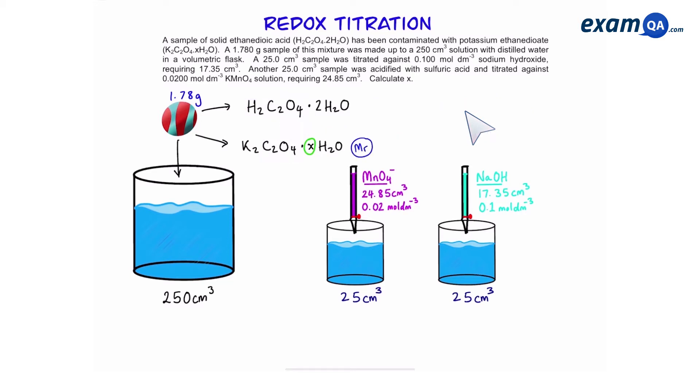Okay so to work out the value of x if you've seen the previous videos on redox titrations we want to work out the relative formula mass for the salt. So to work out the value of x we need to know the relative formula mass of the potassium ethane dioate hydrated crystal. In other words the MR. Of course to work out MR we need to know mass and moles.